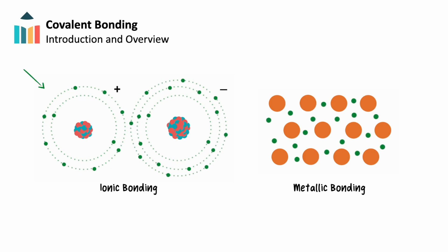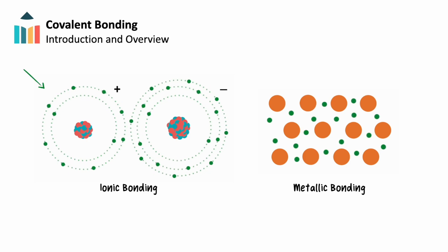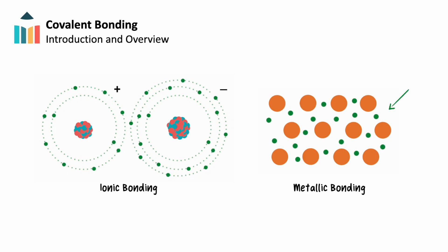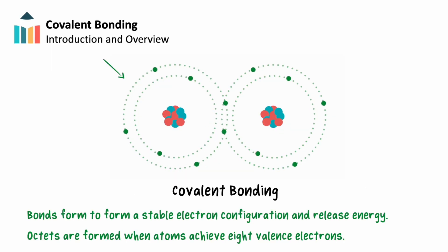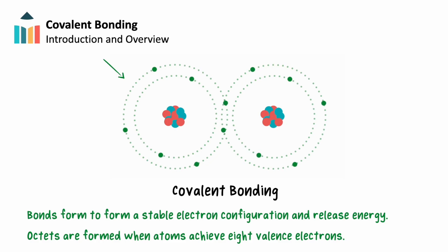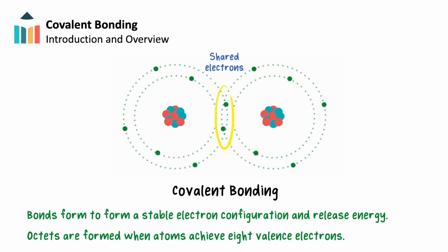In contrast to ionic bonding, which involves the transfer of electrons, and metallic bonding, which involves the delocalization of electrons, covalent bonding involves the sharing of electrons between atoms to form molecules.